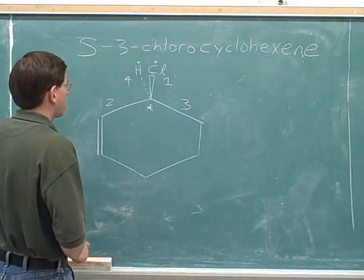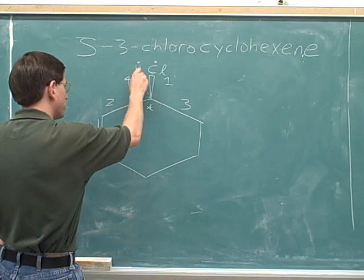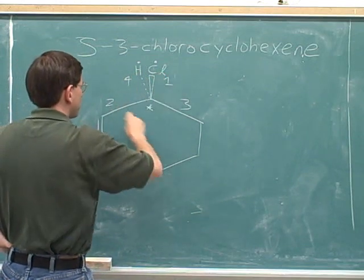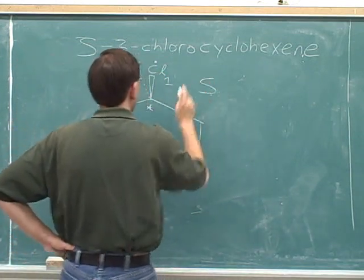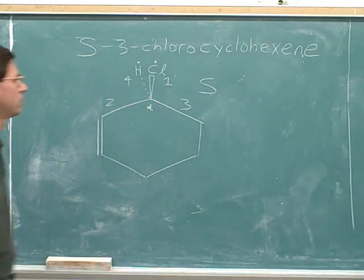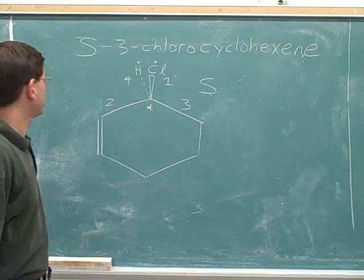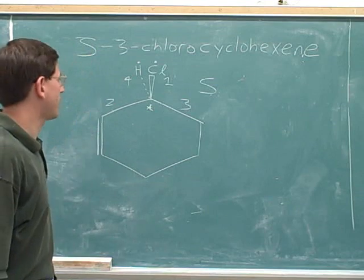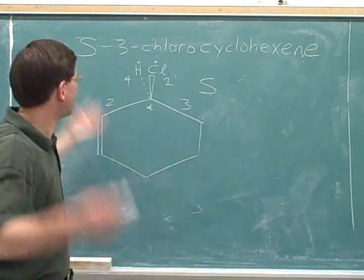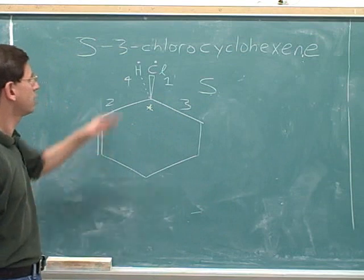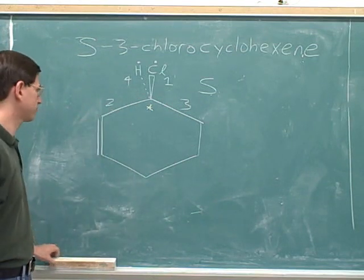There's no need to make any swaps to figure out the configuration, because we put the number four pointing away from us. So one to two to three here is arranged counterclockwise, which is S. And that's what we were hoping for — we were trying to draw an S. So it turns out that when we made our guess, it was correct. We don't need to make any modifications. This is the drawing of S-3-chlorocyclohexene.